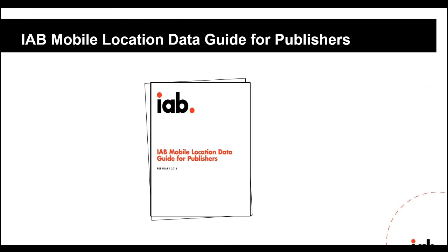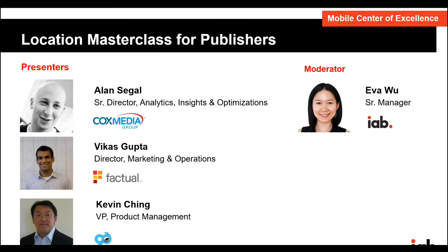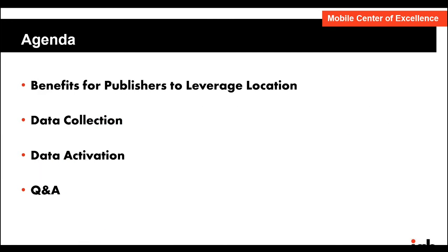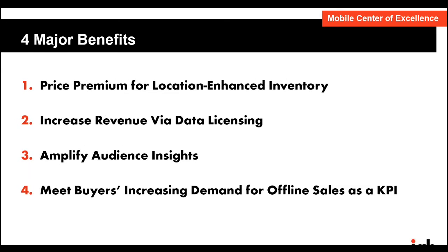The working group worked for several months in the second half of 2015 and early 2016, and in February this year issued the IAB Mobile Location Data Guide for Publishers, offering monetization tactics. In today's webinar we'll break down the key points with three contributors: Alan Seagal, Senior Director of Analytics Insights and Optimization from Cox Media Group; Vikas Kupsa, Director of Marketing and Operations from Factual; and Kevin Chen, VP of Product Management from NiceDecimal.